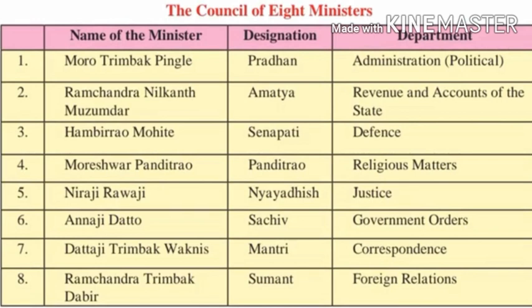Third, Hambir Rao Mohite — designation Senapati, department Defense. Fourth, Moreshwar Pandit Rao — designation Pandit Rao, department Religious Matters. Fifth, Neeraji Raoji — designation Nayidhish, department Justice. Sixth, Annaji Dato — designation Sachiv, department Government Orders.